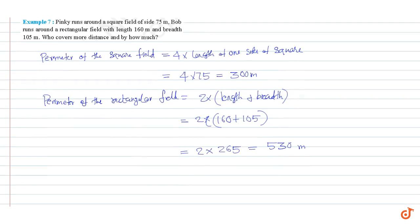The difference in distance covered equals 530 minus 300, which equals 230 meters. These are our answers.